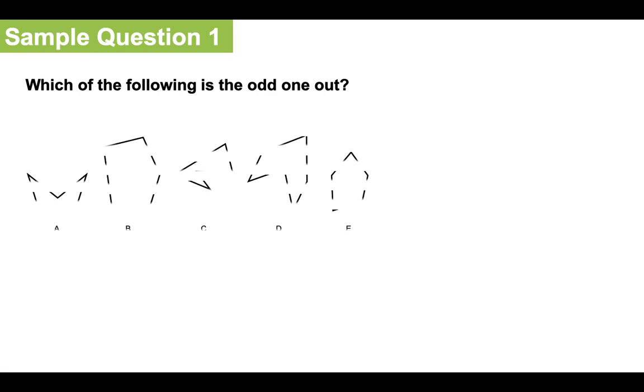Let's take a look at a Nonverbal 11 Plus Reasoning test question. Sample Question 1: Which of the following is the odd one out? We are presented with five different shapes A, B, C, D and E. We have to decide which one is the odd one out.